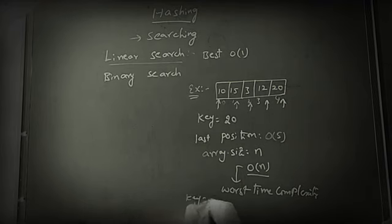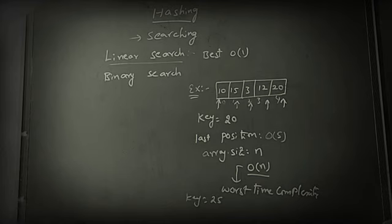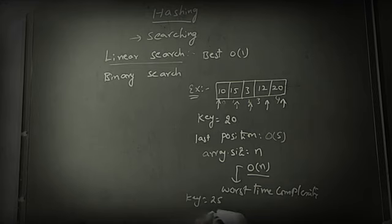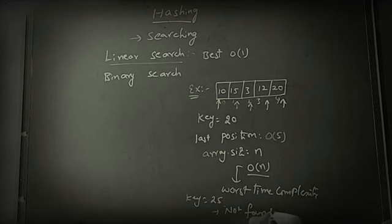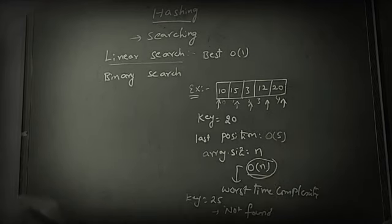Suppose you want to search the key element 25, but there is no element 25 in the list. Even so, the linear search will start from position 0 and go until the last position. The result is that the key is not found. How many steps does it take? The size of the list — that is the worst case time complexity of linear search.